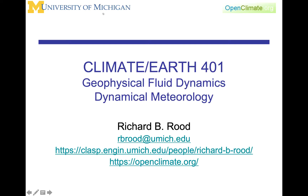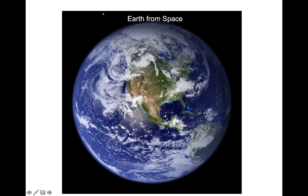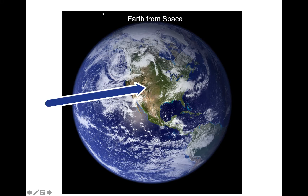This lecture in Climate and Earth 401 is on the basic structure of Earth's atmosphere. This first figure is a photograph of the Earth from space, and in this you see the blue of the oceans, you see the green and the brown of the continents. In this case, North America is focused in the center.